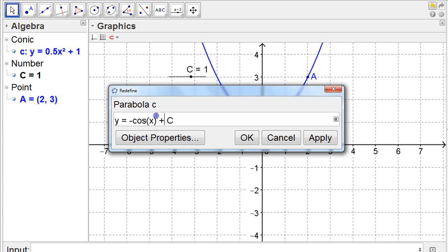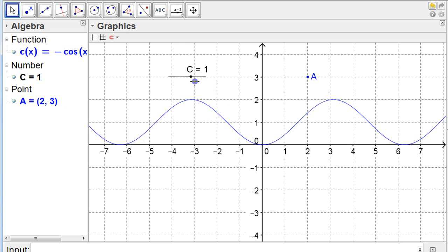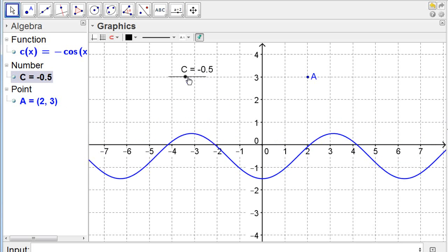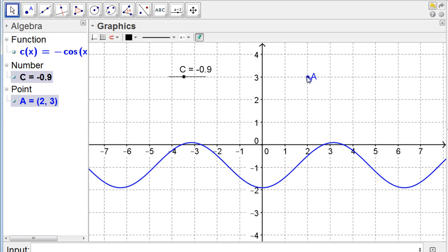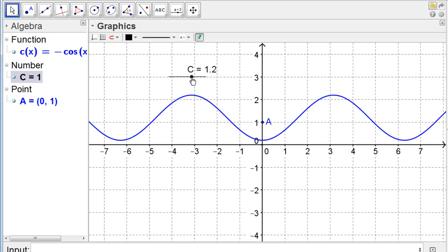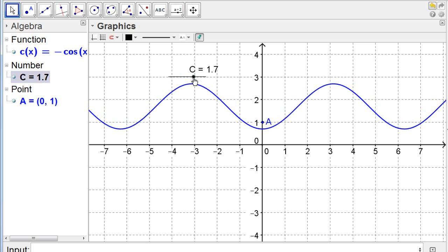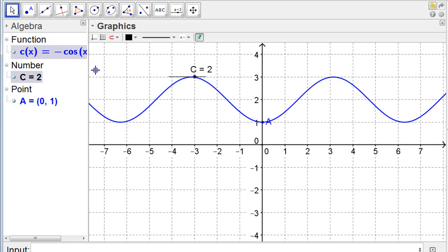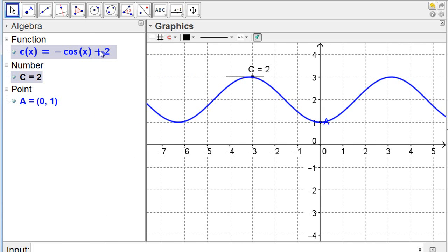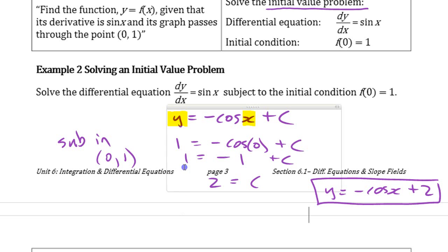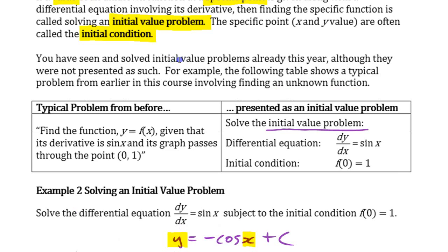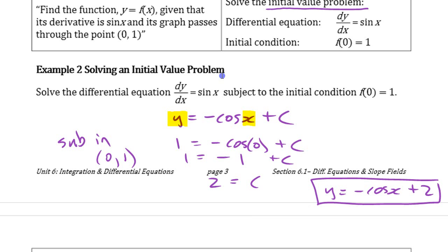So if I slide this thing up and down here, there's a lot of different curves it could be. It could be any constant on the end there. But there's only one that's going to pass through 0, 1. So there's only one curve that passes through there. If I slide this up so it passed through that point, it's got to be negative cos x plus 2. That's the specific solution that passes through that point. That's solving differential equations, whether you have an initial condition or not. Any questions about that?